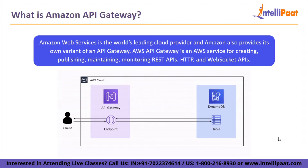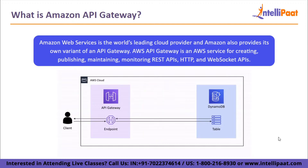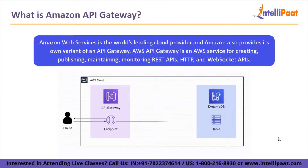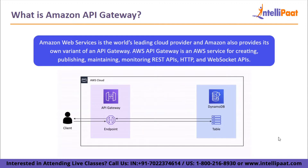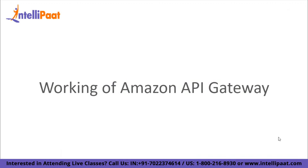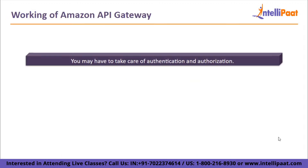API developers can create APIs that access AWS or other web services as well as data stored in the AWS cloud. As an API Gateway developer, you can create APIs for use in your own client applications. Typically in all architectures that use a Lambda function, right before the Lambda function where the working code is deployed, you would use an API Gateway.